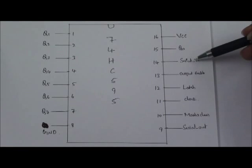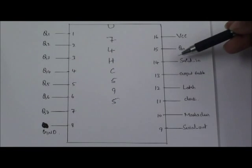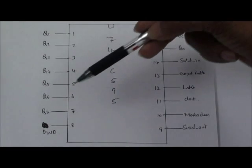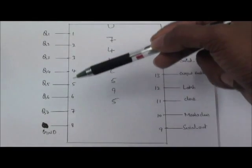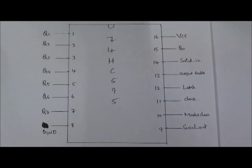So, whatever the data is present at the serial input pin is pushed at the outputs from Q0 to Q7. Then the data are available to the external load.